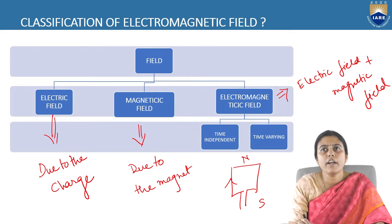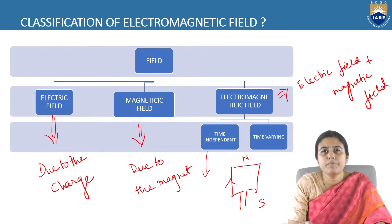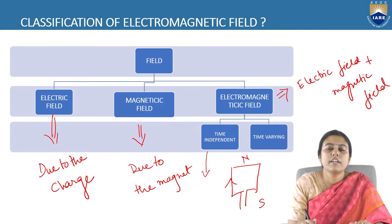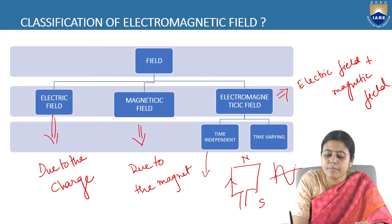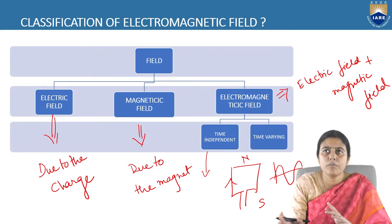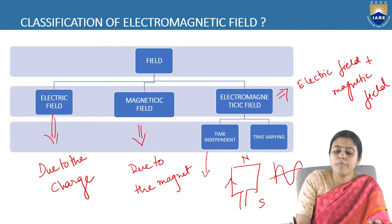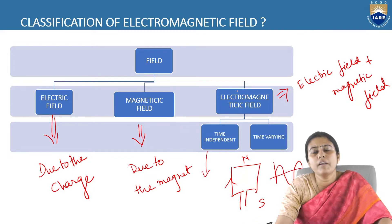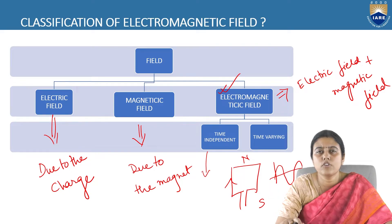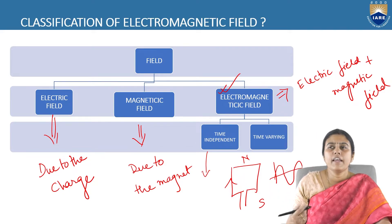Electromagnetic field is of two types: one is time-independent and another is time-varying. Time-independent is due to DC current — the direct charge or current is fixed and there is no change of the poles. Time-varying field is due to AC current, where the north pole and south pole are changing continuously. Maximum electrical apparatus like transformers and motors work on the principle of the electromagnetic field.